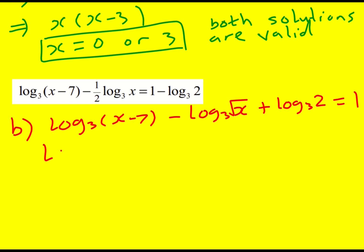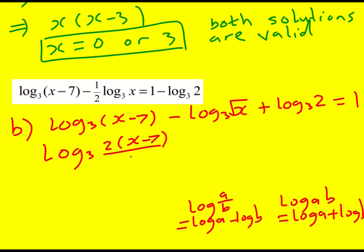And I've done that because now I can use the rules of logs and bring this into a single log. So log to base 3, I'm going to times these two together, 2 times x minus 7, because I'm using log AB is equal to log A plus log B. And then with the minus, I've got log A over B is equal to log A minus log B. So basically I need to divide by the square root. So that's where we are at the moment.